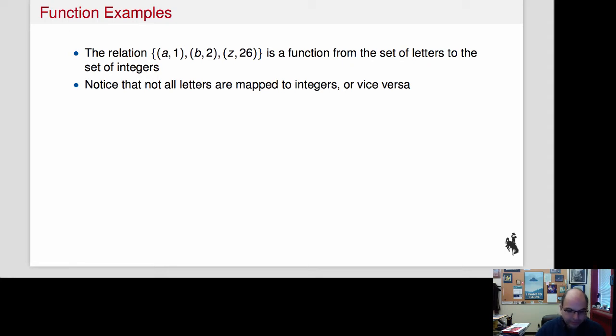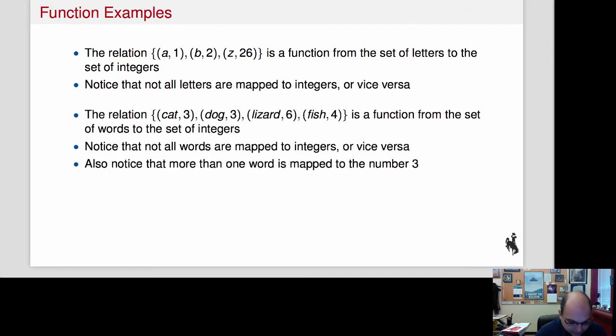So we have some letters that didn't get a number, like E—there's no number that it maps to. And some integers that nobody's mapping to, like 5—nobody's mapping to 5. That's okay. We just need to have a relation, and there's only one tuple for each first element, or rather for each element of the first set.